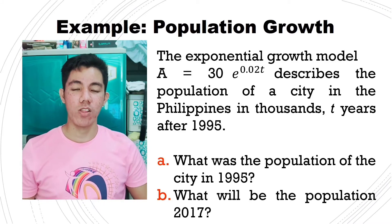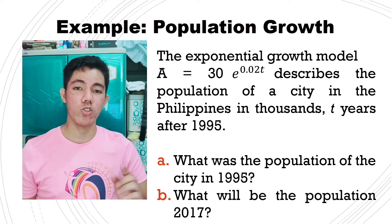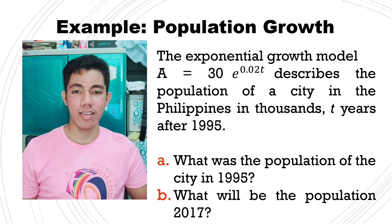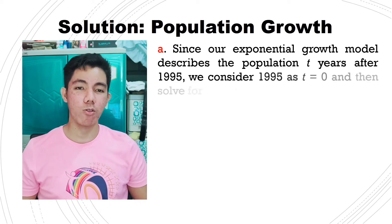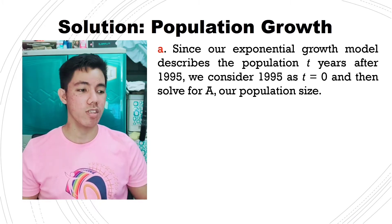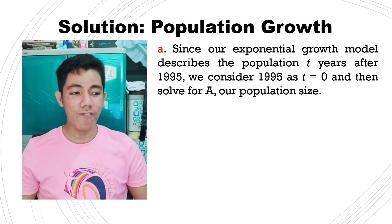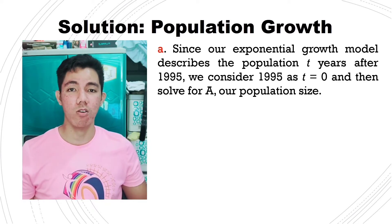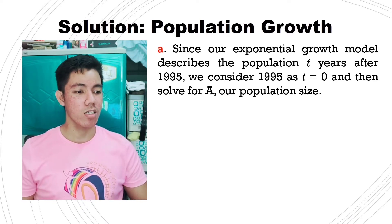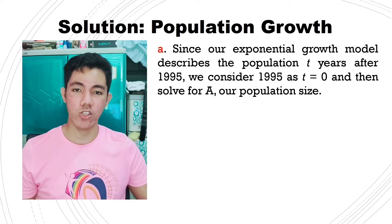In order to get the population growth, always memorize the formula of the exponential growth, which is A equals to P times e raised to rt. Since our exponential growth model describes the population t years after 1995, we consider 1995 as t equals to 0. Then we solve for A, which is our population size.